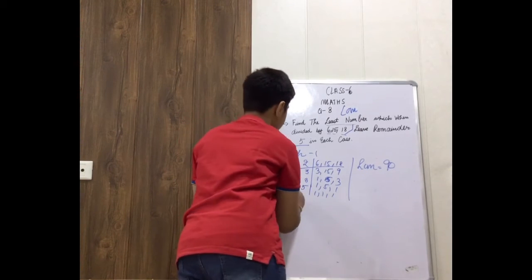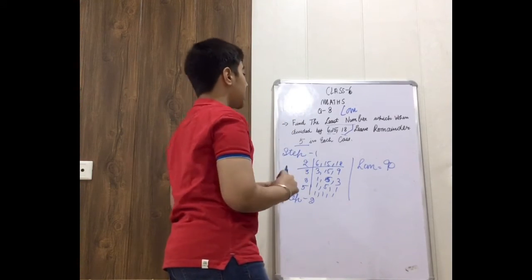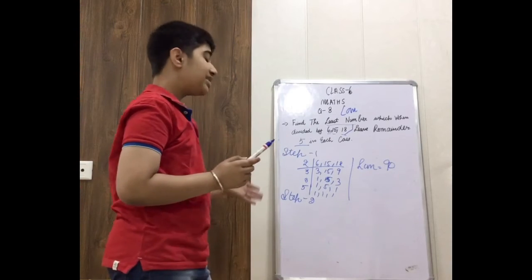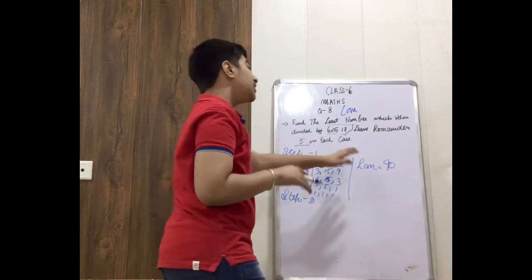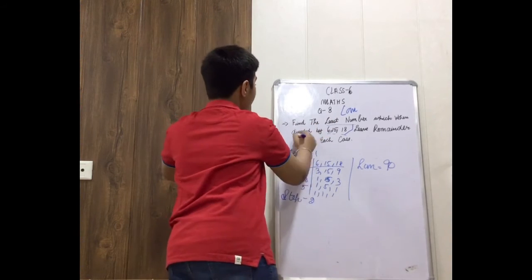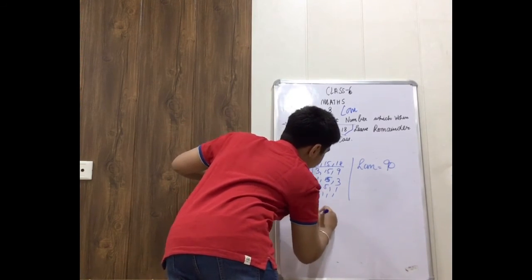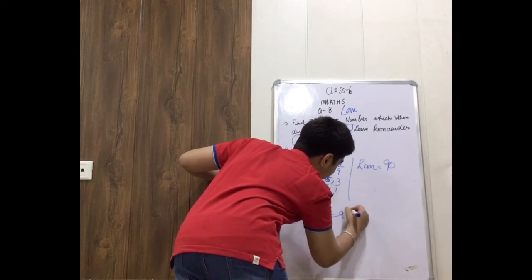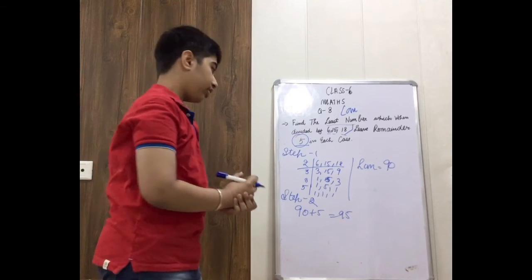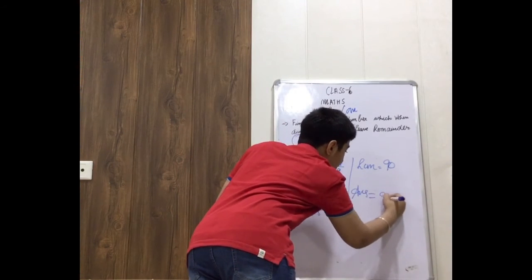So we will be coming to Step 2. Now here you see 5 is left in each case, so 90 will not be our answer because we have a number 5 left. So we will be doing 90 plus 5 equals 95. And now 5 is not left, so our answer of this question will be 95.